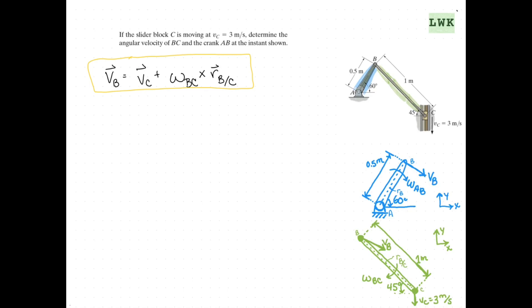Let's start by looking at what we know. For Vc, at least, we know that equals 3 meters per second and it's going down. So that's going to be in our J direction.